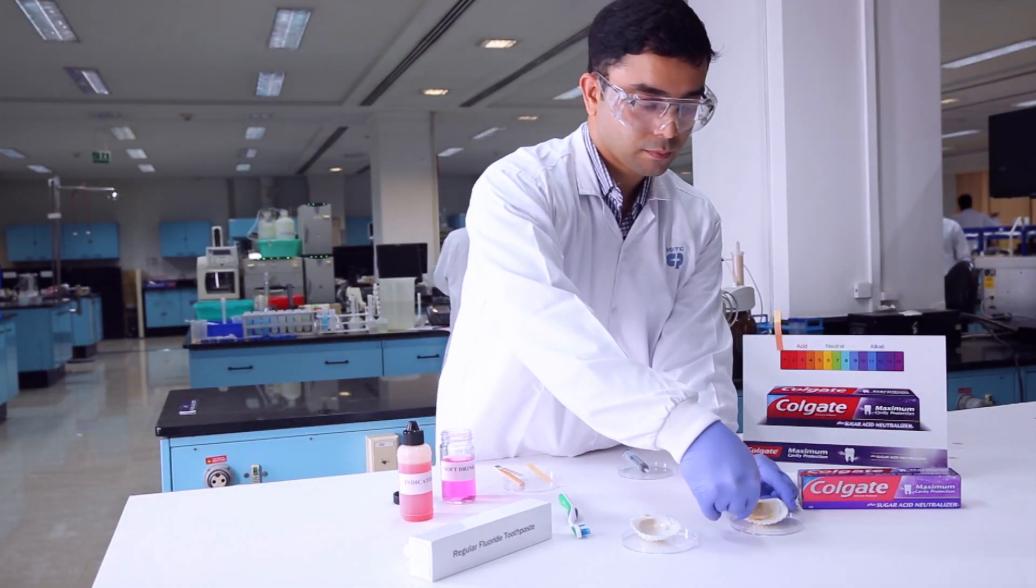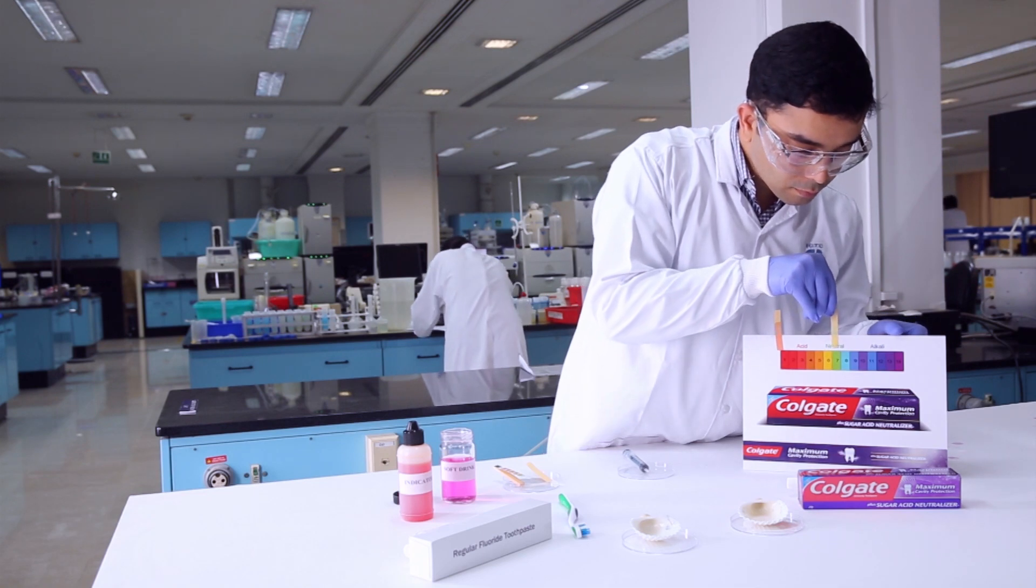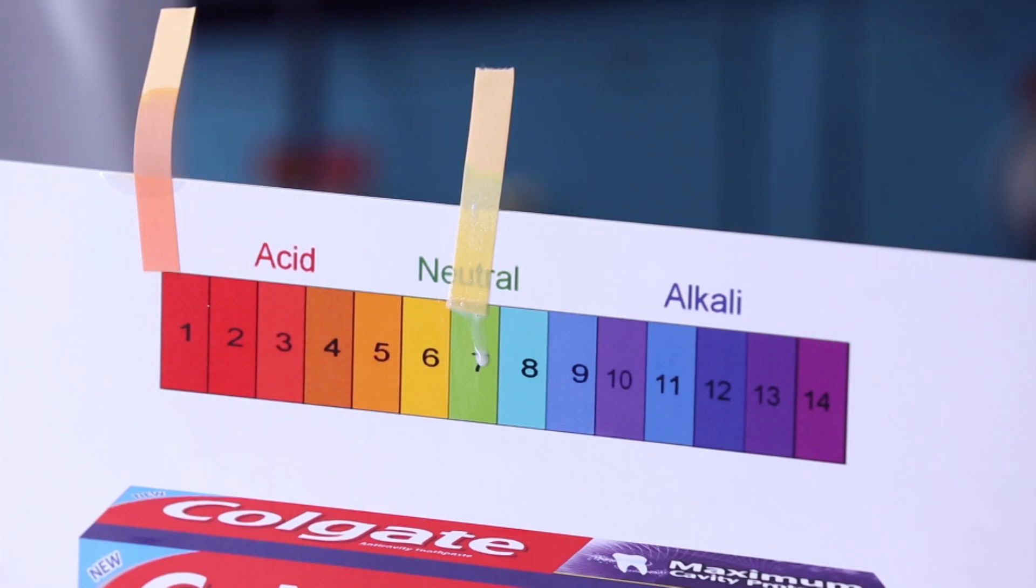Now, we will use pH paper to confirm it further. Yellow color confirms sugar acid neutralization.